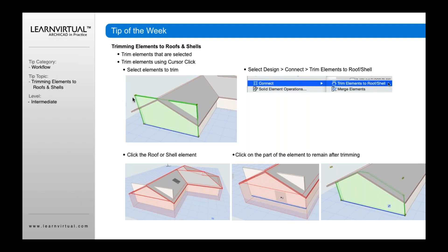Select the element to trim first, then go to Design menu, Connect, Trim Elements to Roof Shell. A cursor will come up asking you to click the roof or shell element that you want to use as your trimming element.